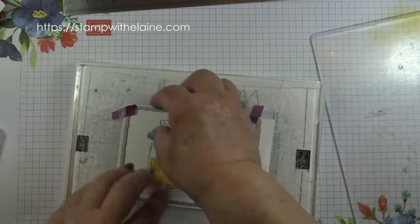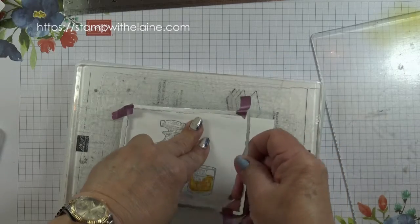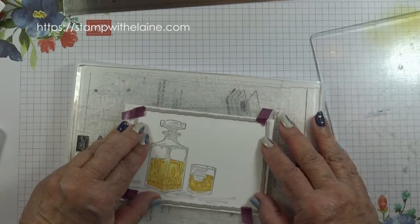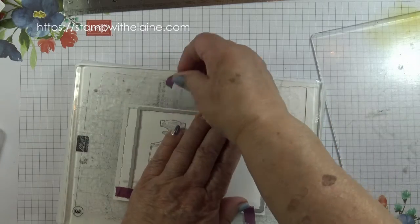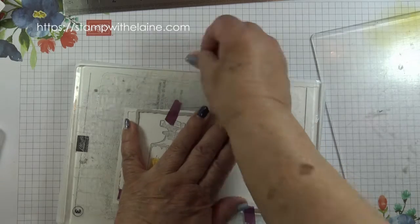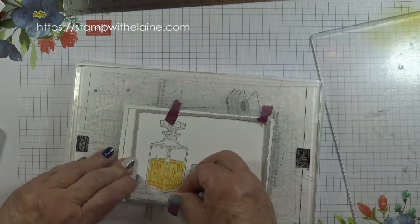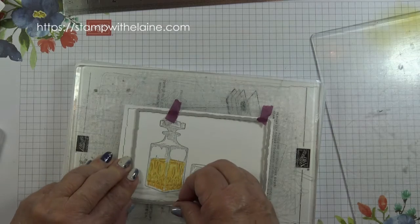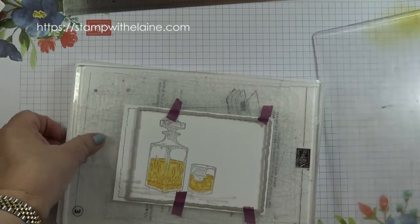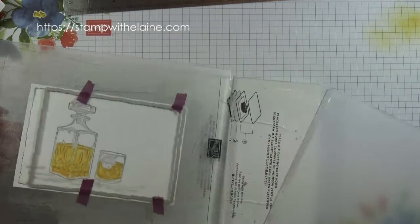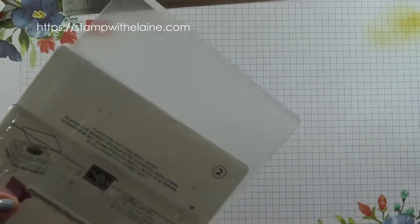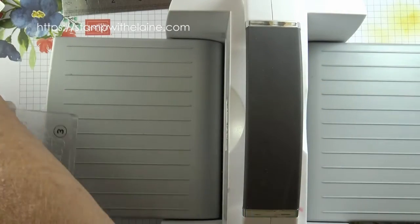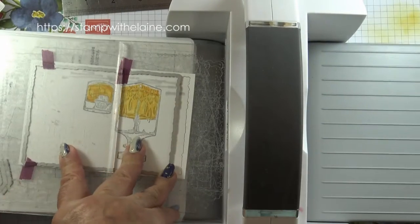Now I want to reposition my die so I carefully take that off and put it in that way. I don't want the washi tape to mark my cardstock so I'll stick it outside. Then move this down and have the plate this way up. Bang in the machine. Turn it round, feed it through.